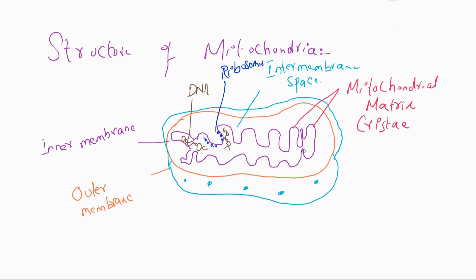So the structure of mitochondria includes an inner membrane with infoldings and a smooth outer membrane. The infoldings form the mitochondrial matrix and cristae. On the inner surface of the cristae, within the mitochondrial matrix, there are small knob-like structures called F1 particles. The mitochondrial matrix also contains a large number of enzymes, co-enzymes, organic and inorganic salts.